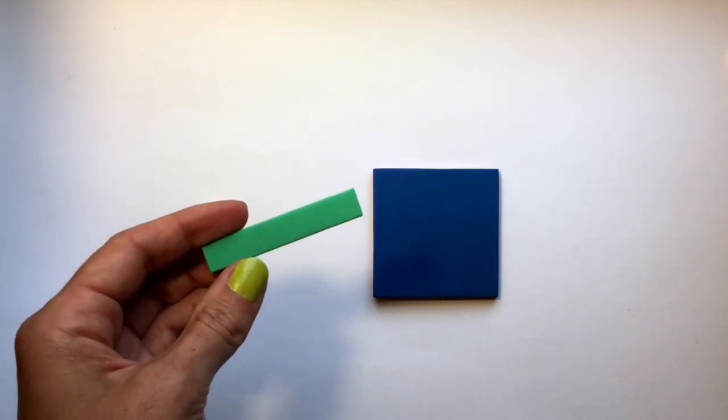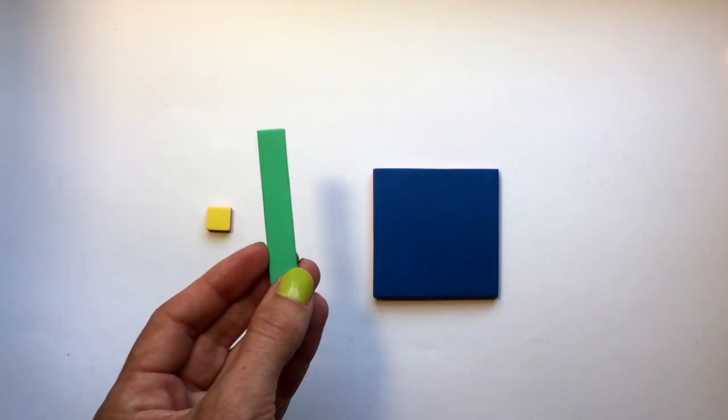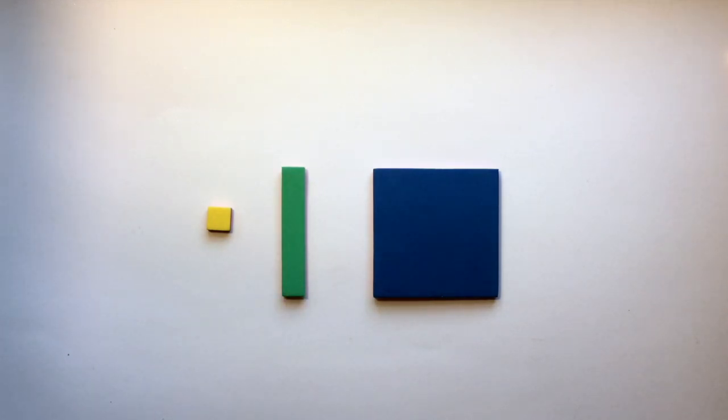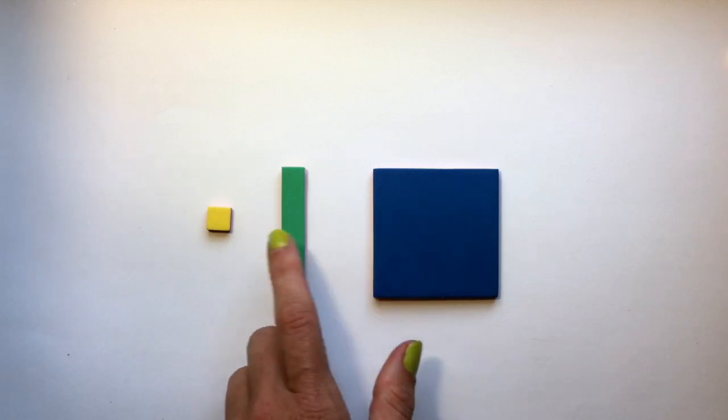This tile here represents x. It represents our unknown or our variable. So if we're working with a problem that has n as a variable, this could be n.